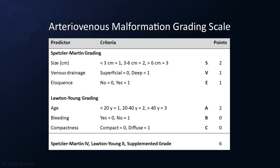The AVM had a Spetzler-Martin grade of 4, with two points given for size, one for deep venous drainage to the basal vein of Rosenthal, and eloquence next to Broca's area. The Lawton-Young grade was 2, with points given for age only.